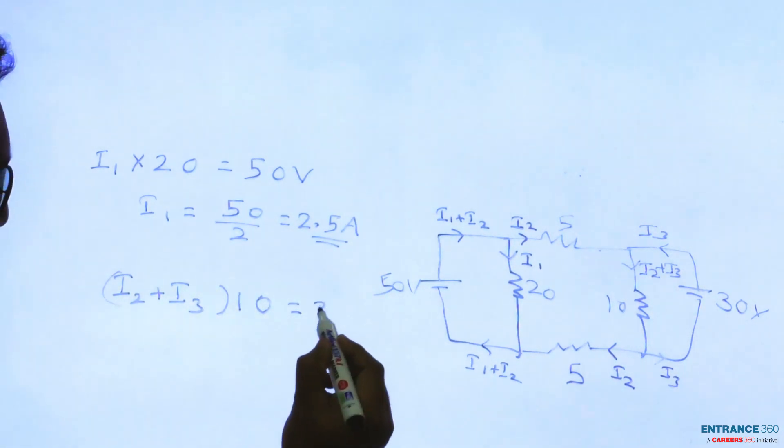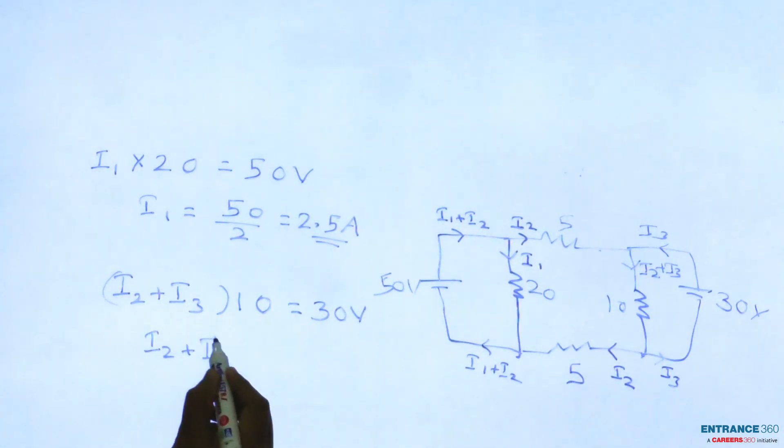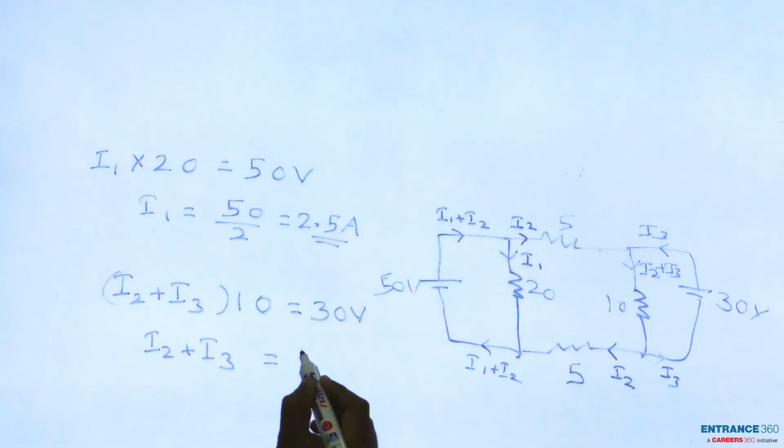So I2 plus I3 equals 3 ampere. Let it be there. Now consider the loop ABCDA.